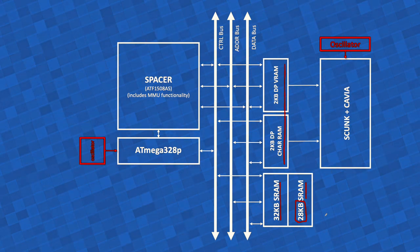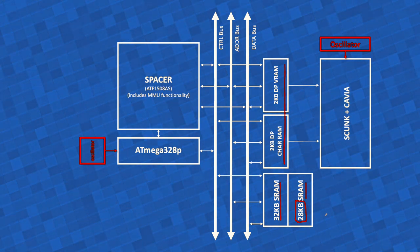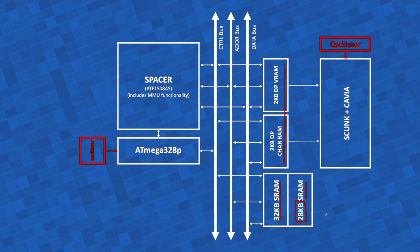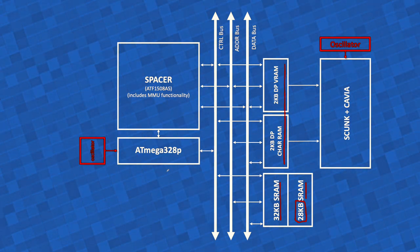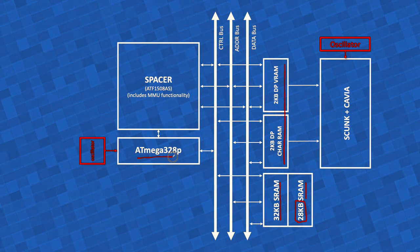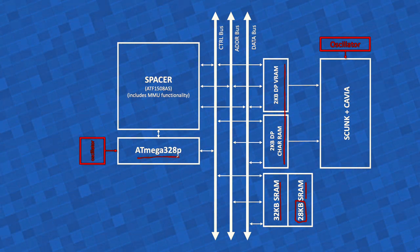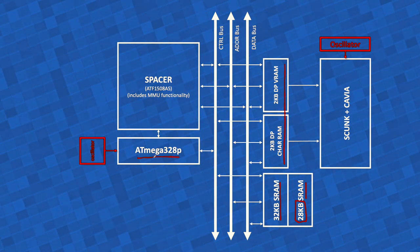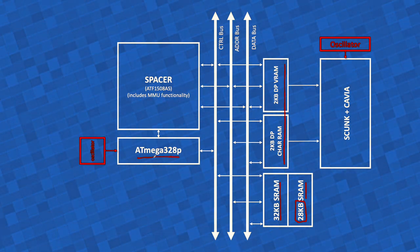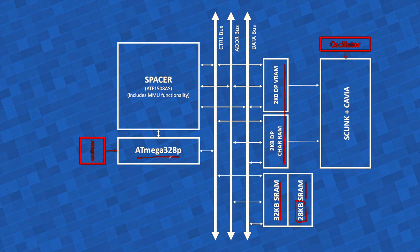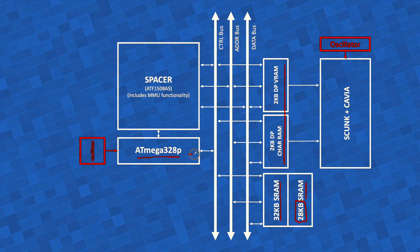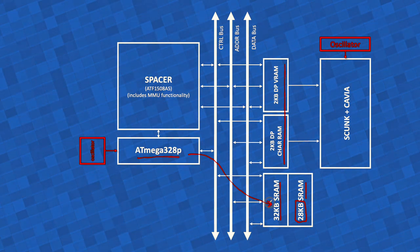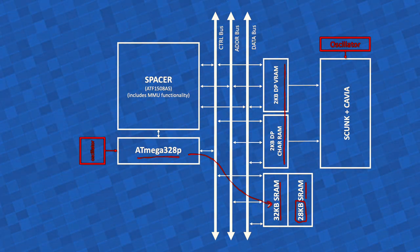The system will have, in total, 64 kilobytes of addressable RAM, and there will be no ROM. The ATmega already has onboard SRAM and onboard EEPROM. The ATmega will fetch the kernel code and the BASIC interpreter code at startup, and load it into the lower address spaces of this 64-kilobyte SRAM block. That will happen seamlessly during startup.